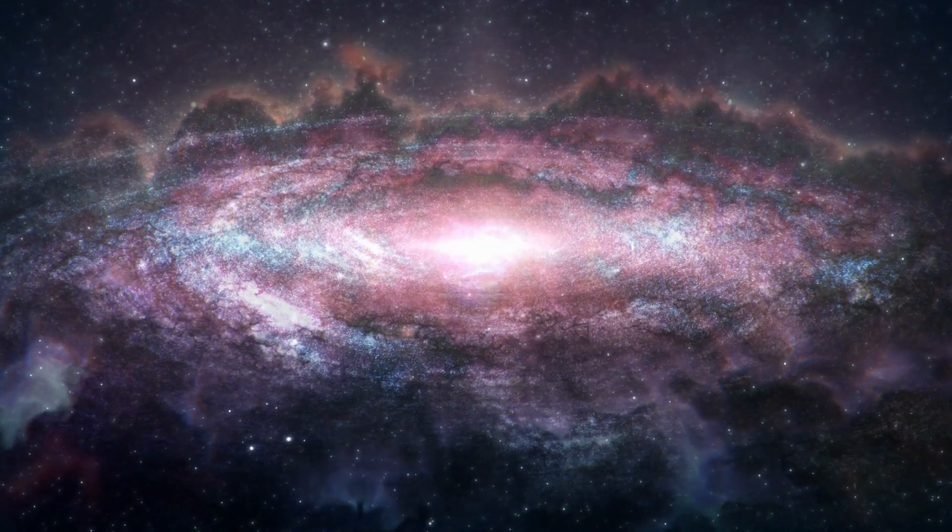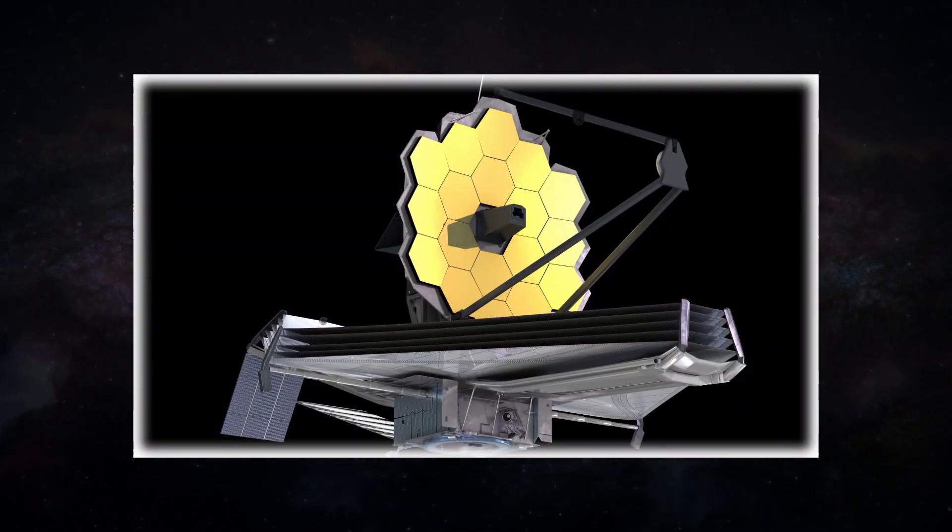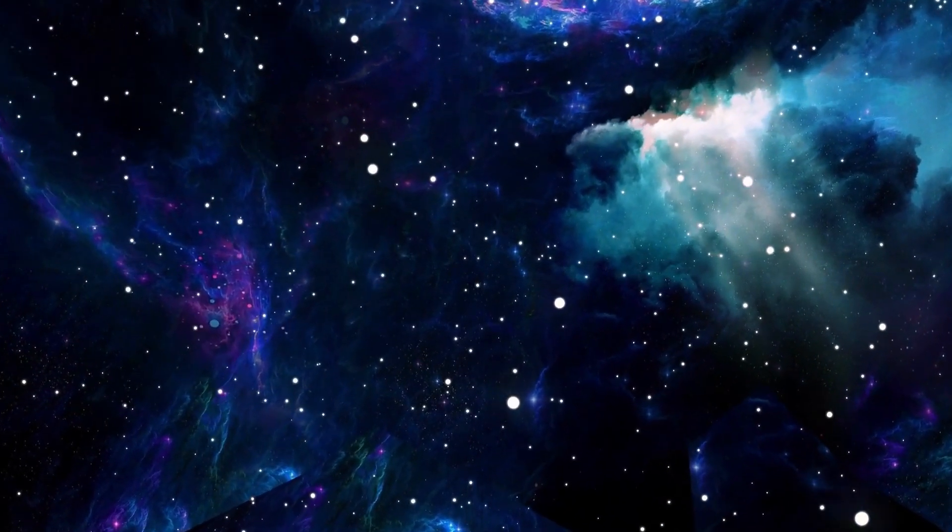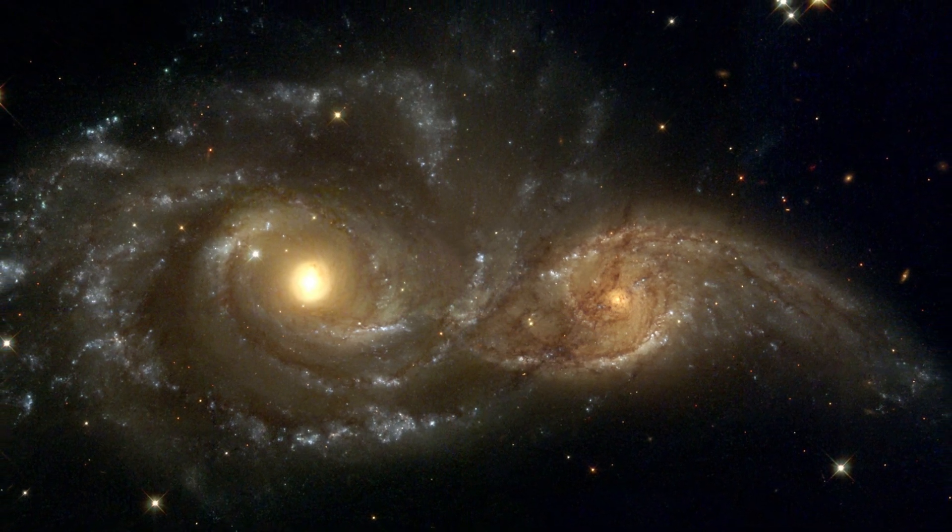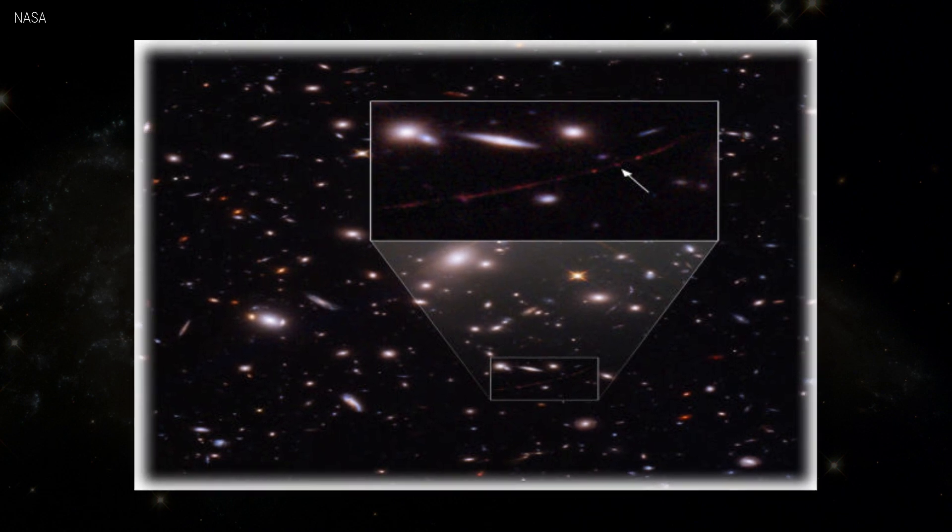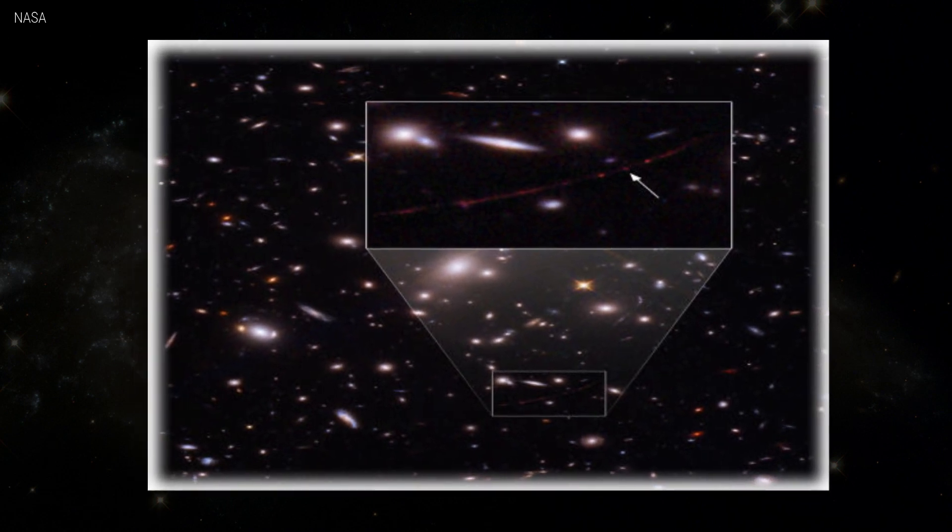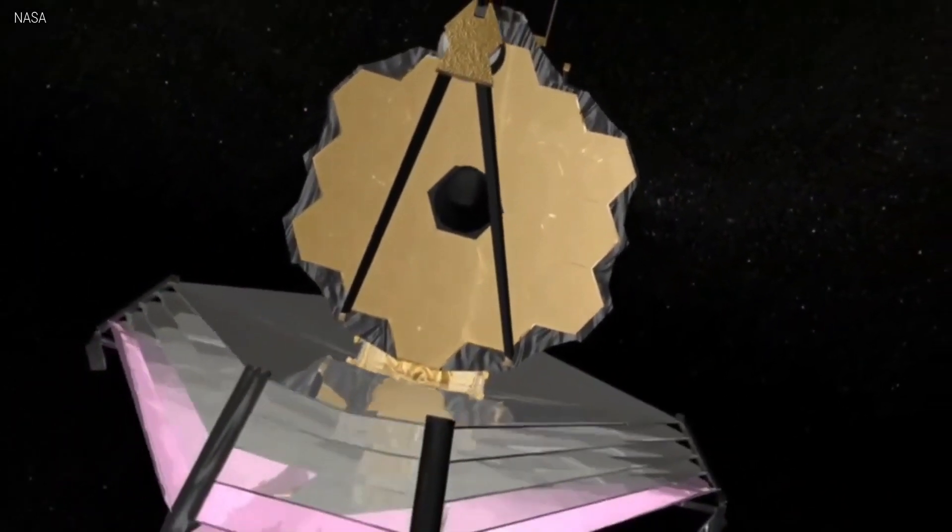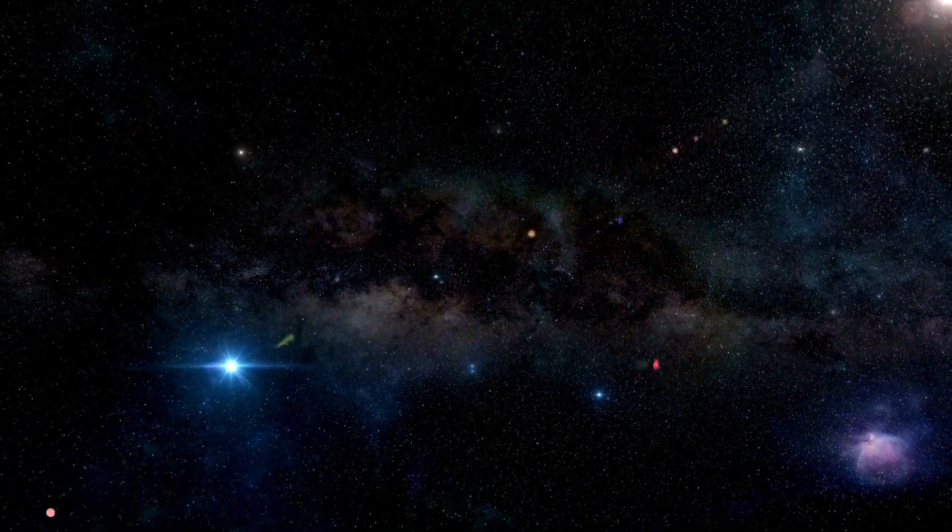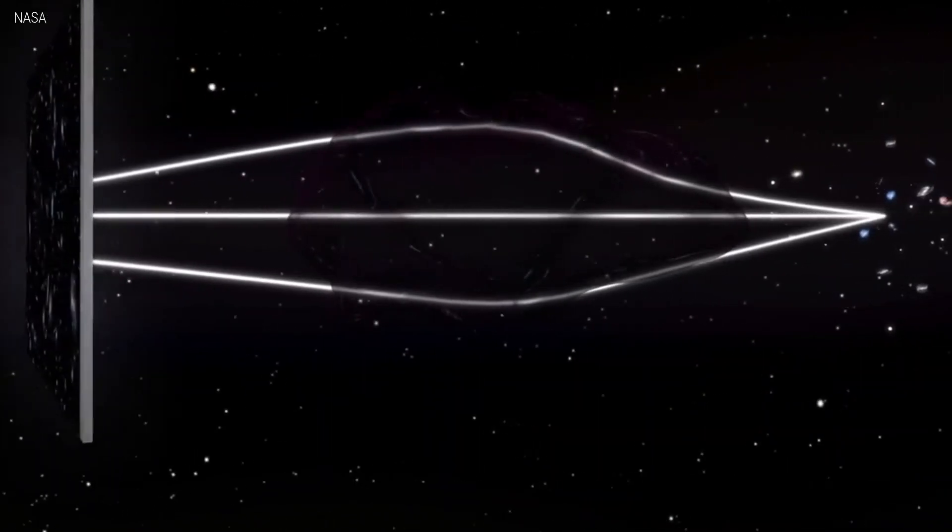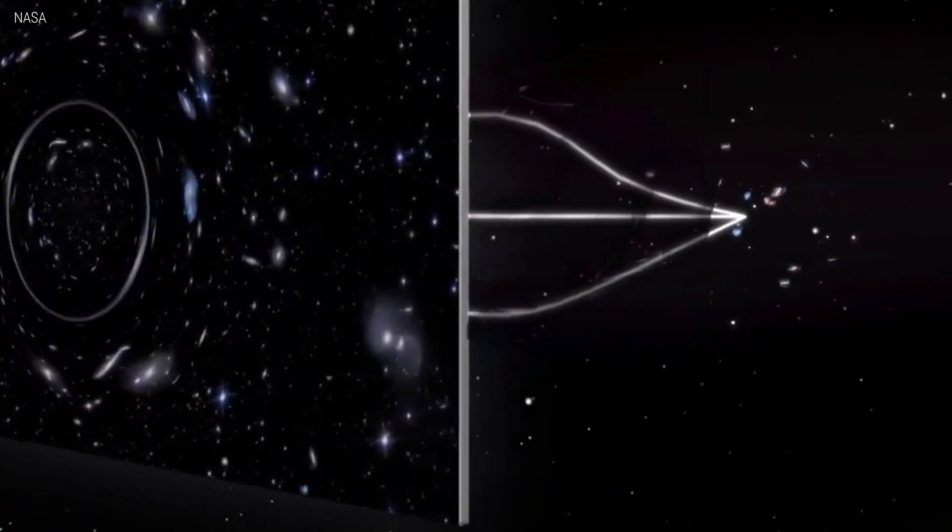A symphony of cosmic proportions ensued as the JWST, a marvel of human ingenuity carrying the torch of infrared light, took center stage in this celestial ballet. Utilizing the gravitational prowess of a cosmic ensemble named WHL0137-08, harmoniously aligned with Earendel's celestial trajectory, the JWST extended its discerning vision. Within the vast cosmic orchestra, the instruments of the JWST played their part, composing a symphony of data that commenced the meticulous unraveling of Earendel's well-guarded secrets.